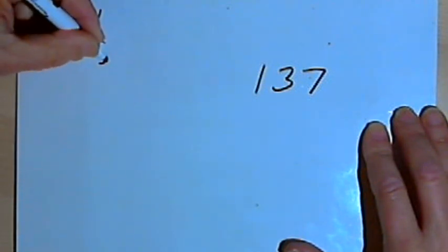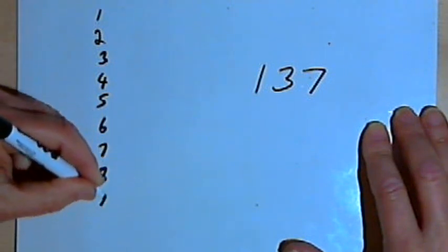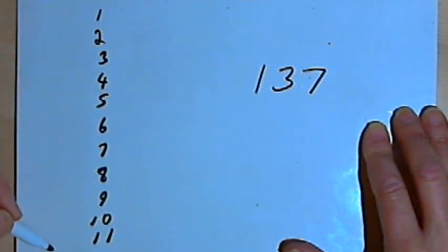So I can make a list of numbers. 1, 2, 3, 4, 5, 6... I'll go up to 11. Maybe I have to go further than that.